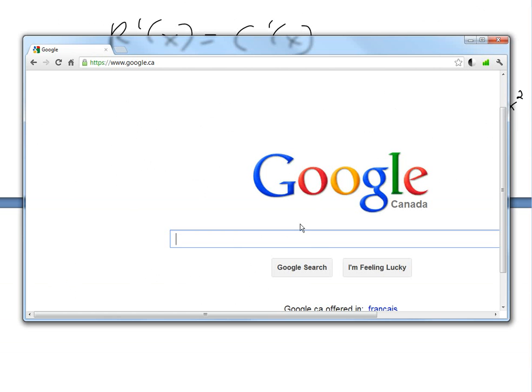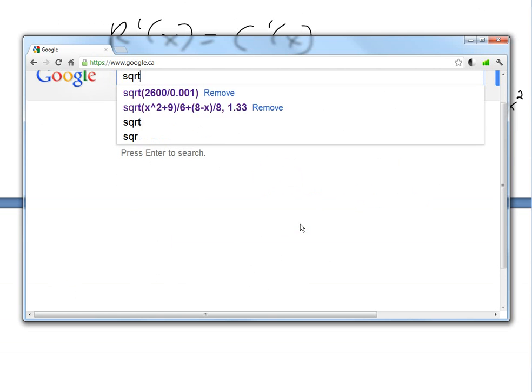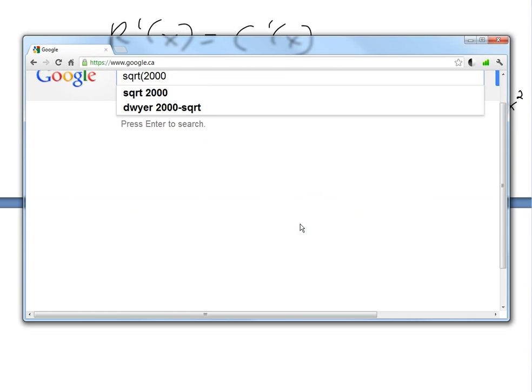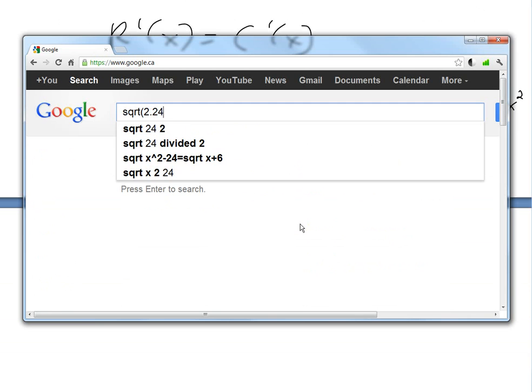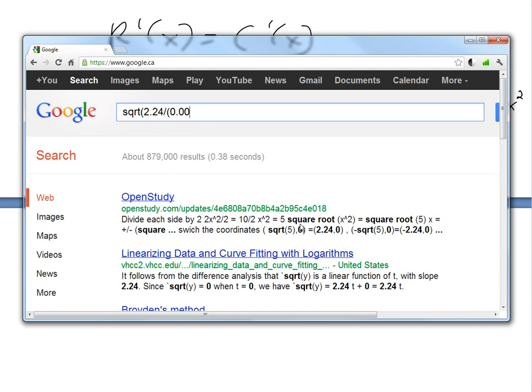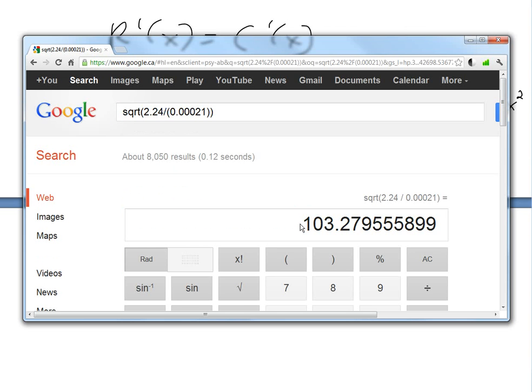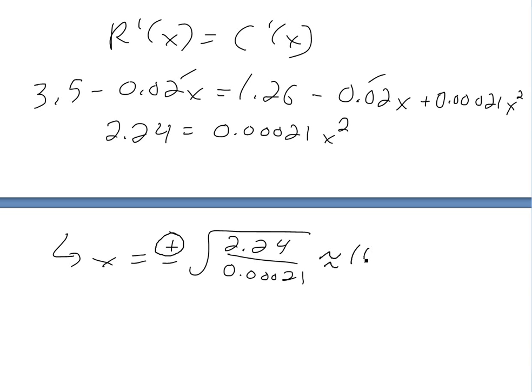If we plug this into the calculator, square root 2.24 divided by 0.00021, this equals around 103.27 or we'll just write it around 103 items. So we'll just call this.